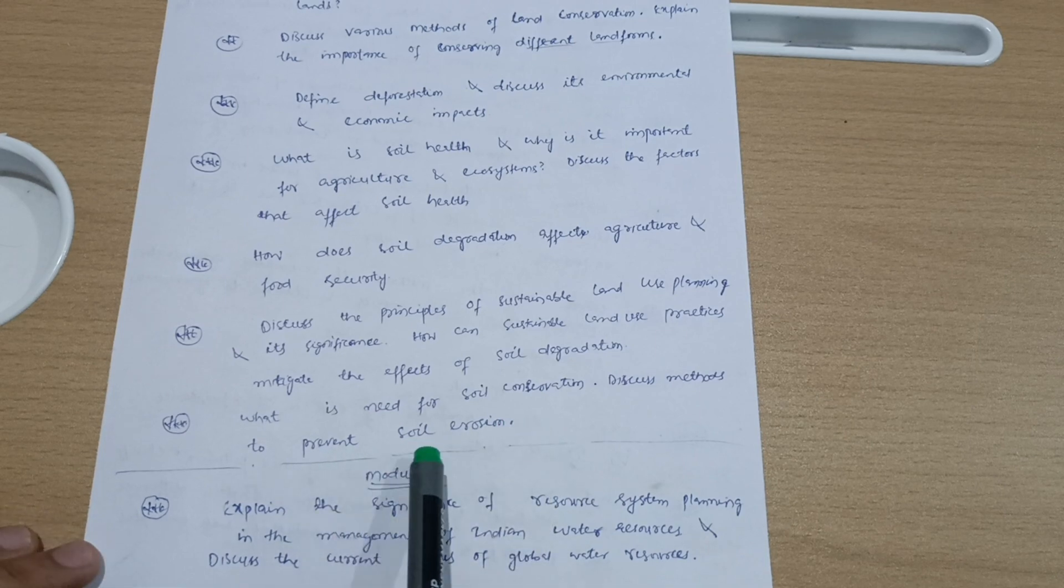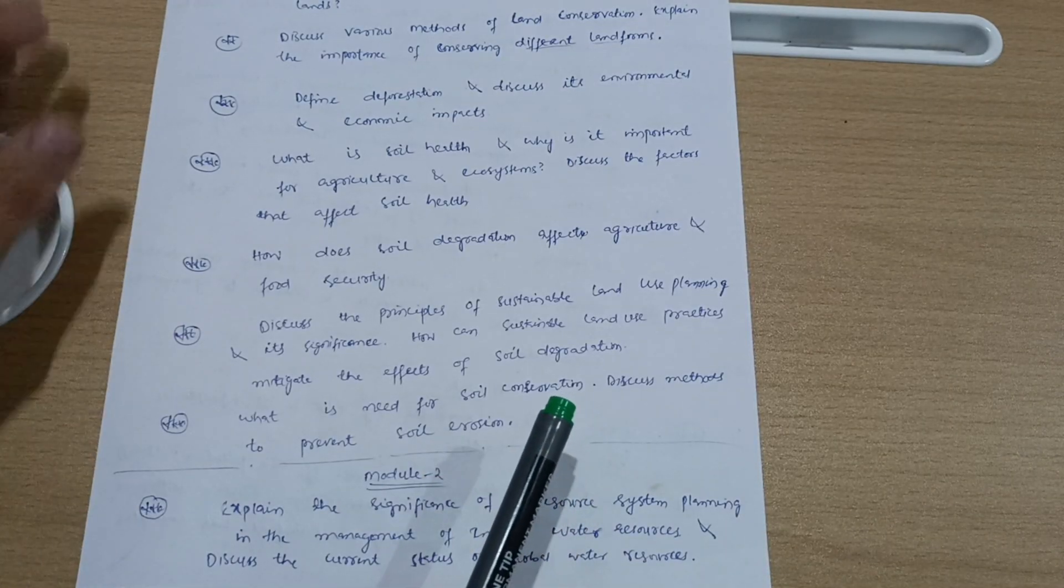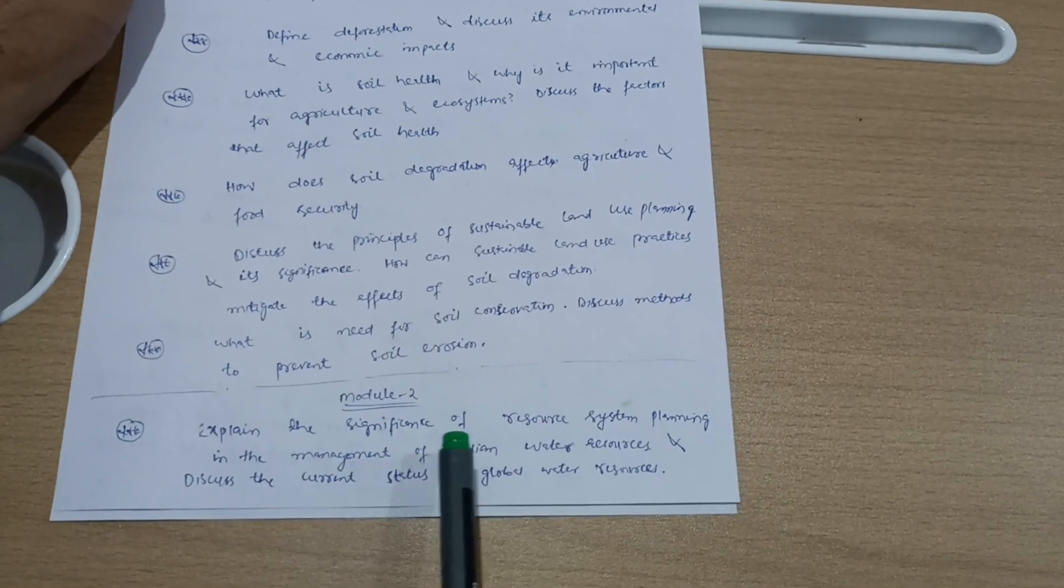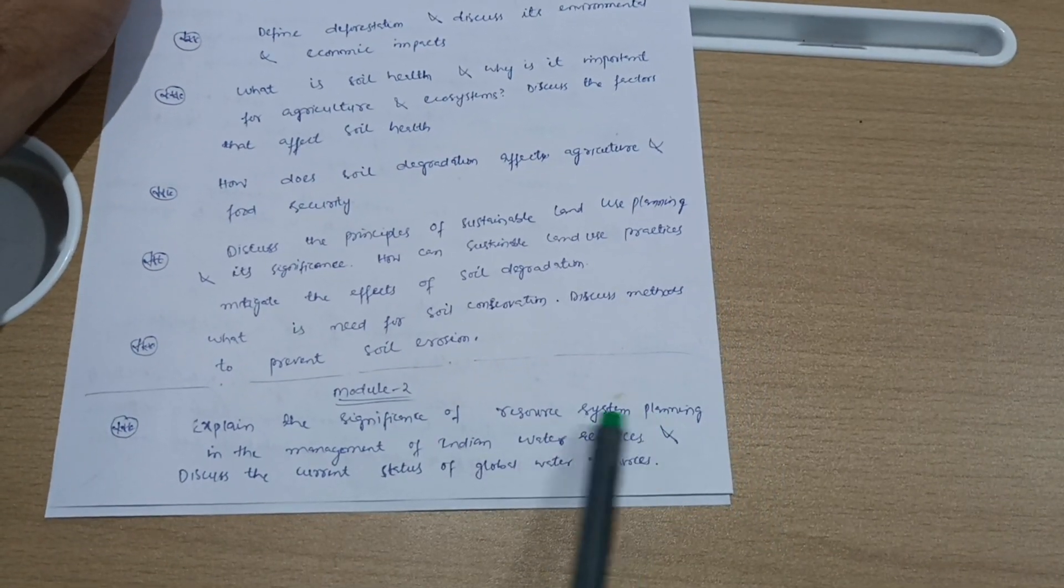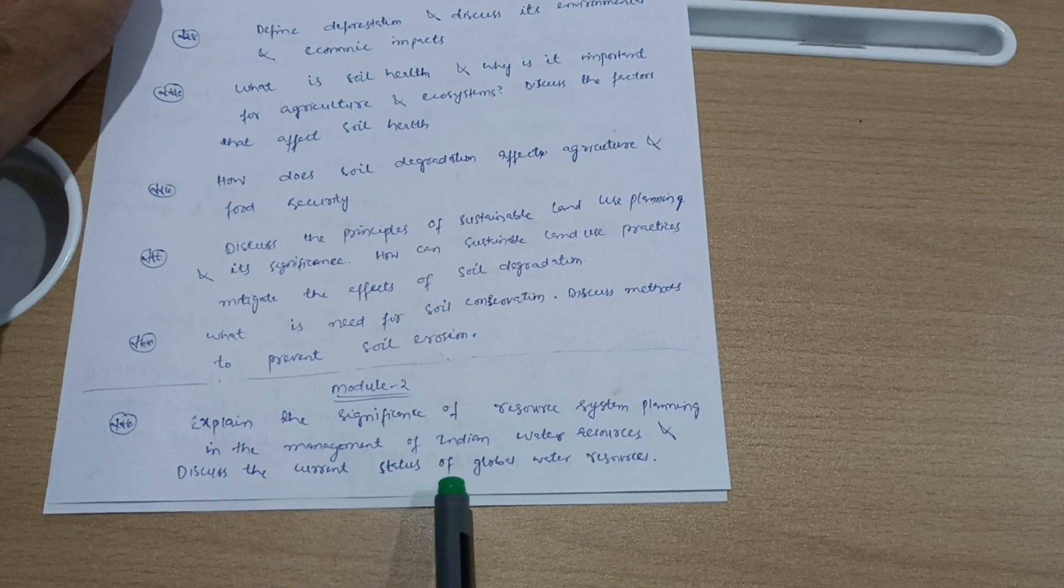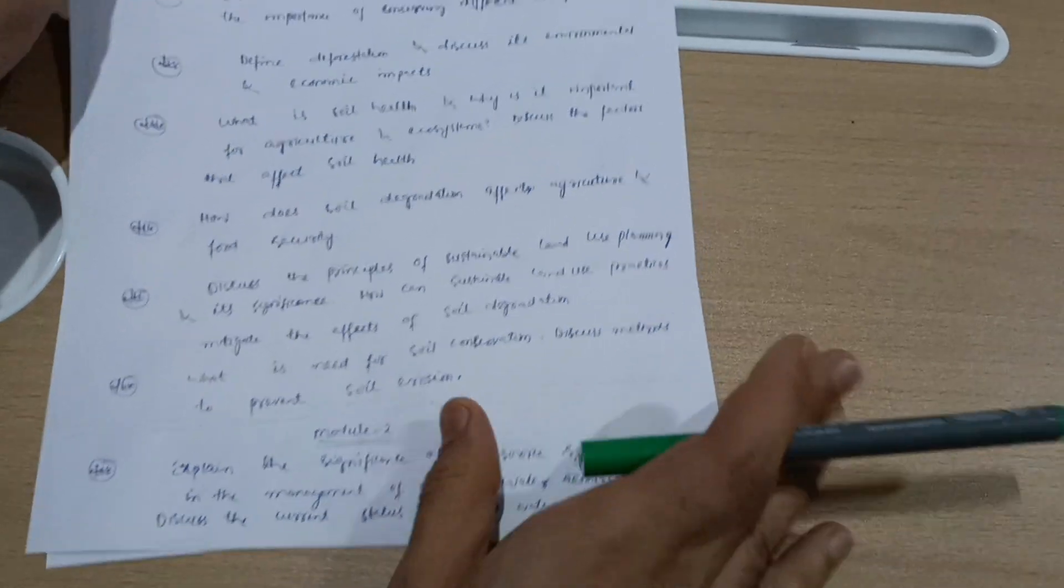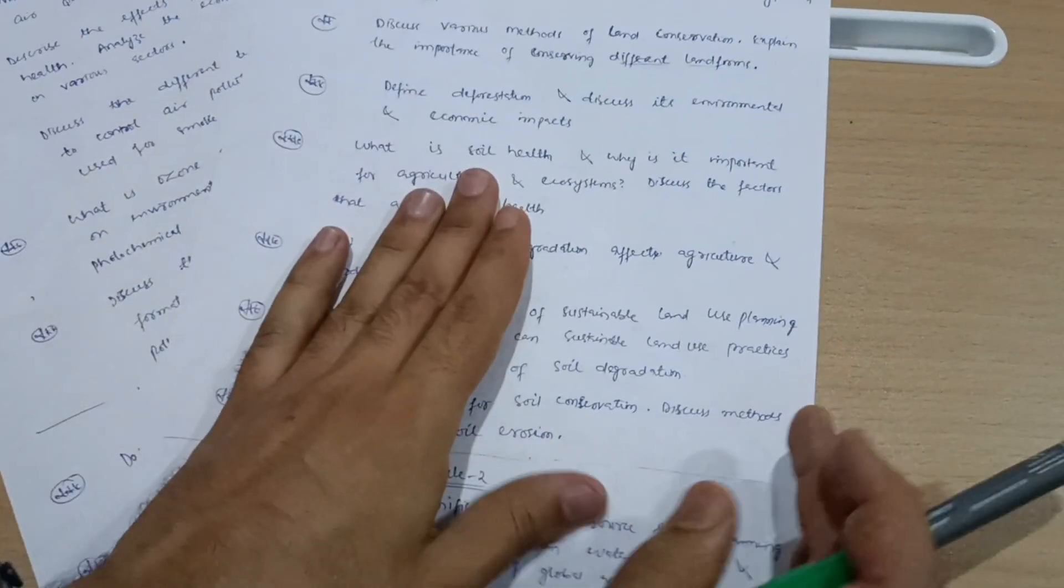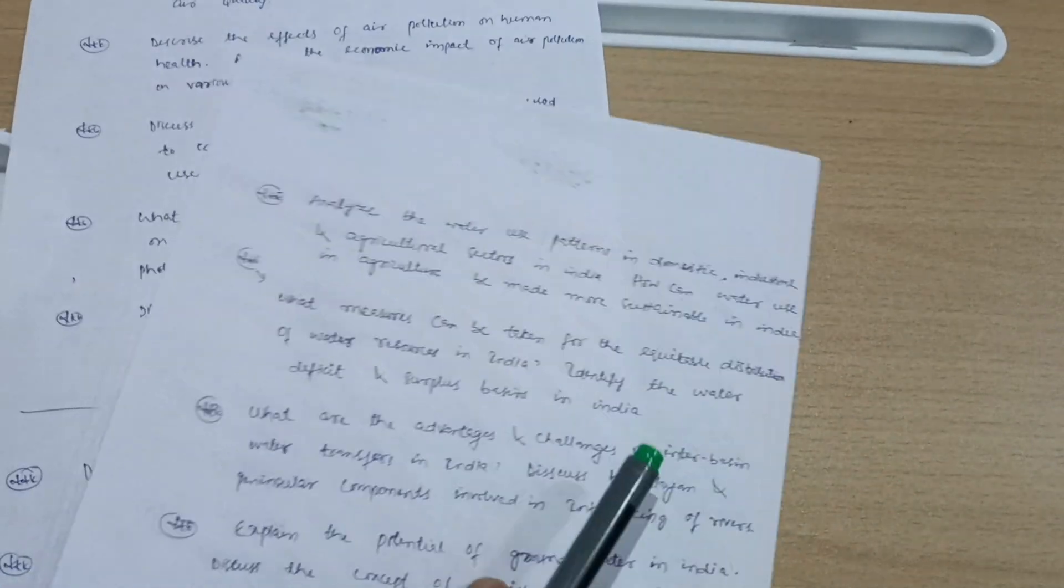This is all about Module 1. Next is Module 2. Explain the significance of resource system planning in the management of Indian water resources and discuss the current state of global water resources. Another question from Module 2...